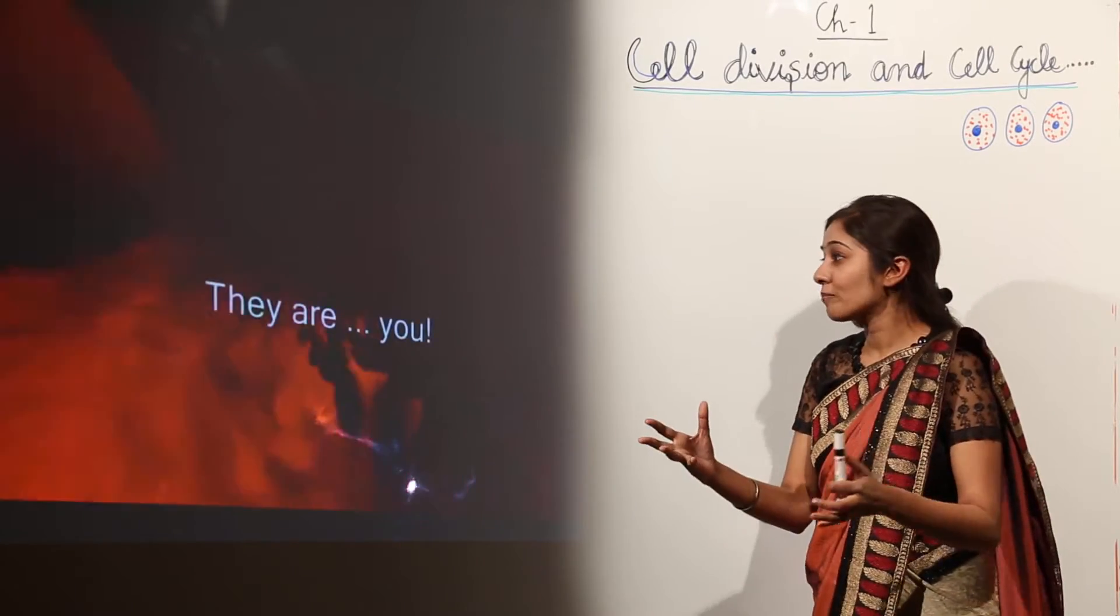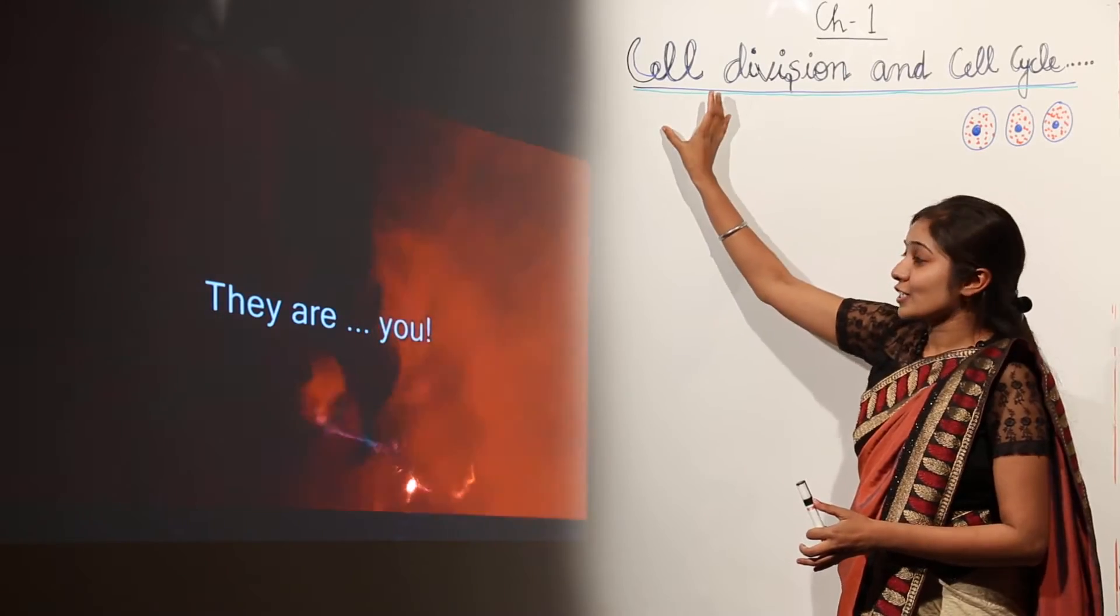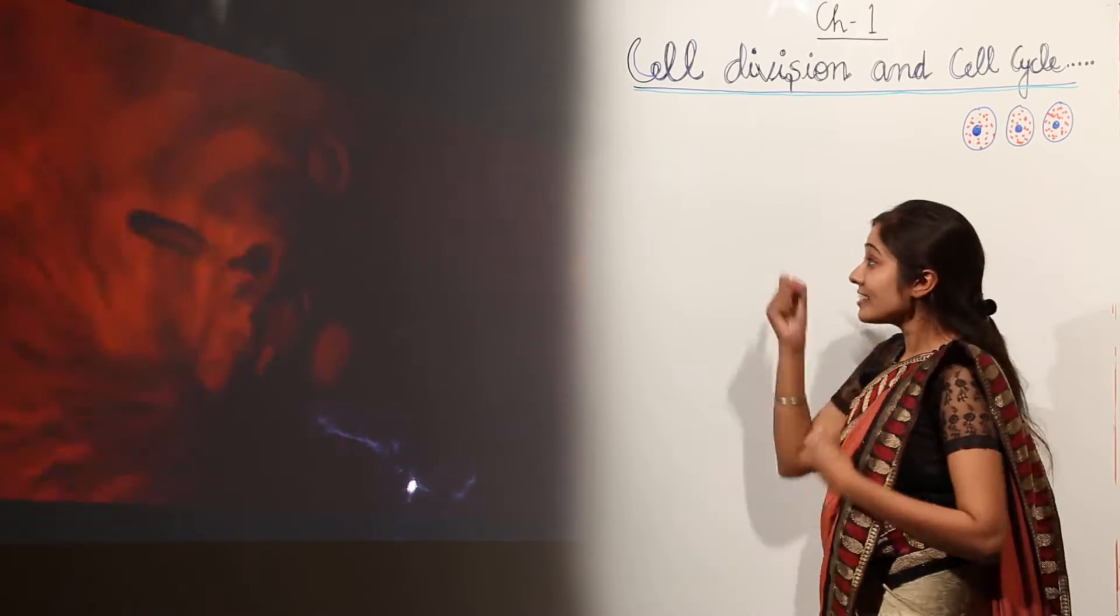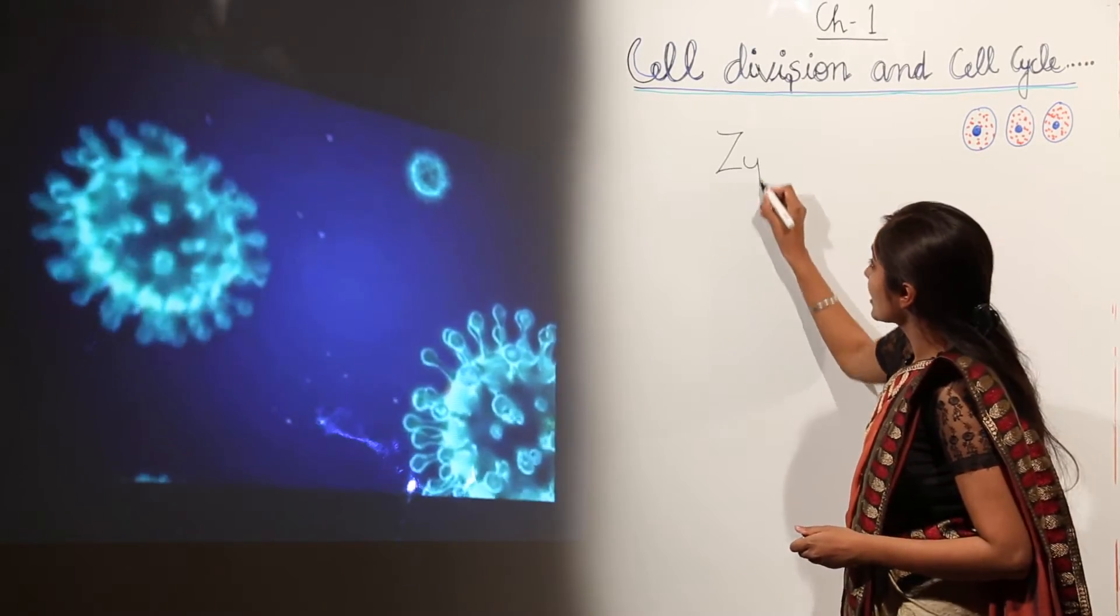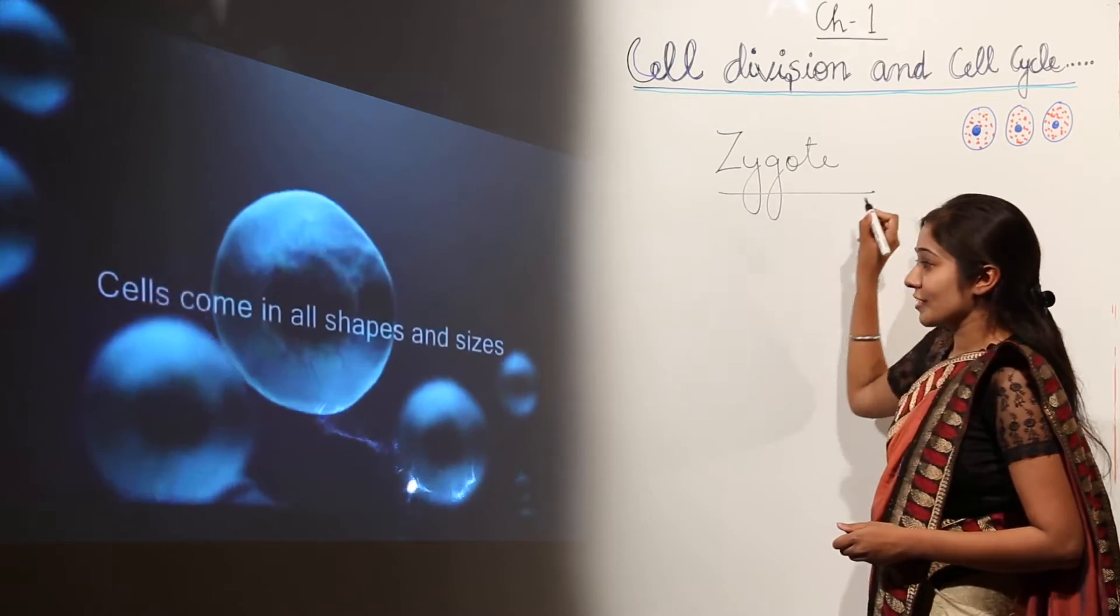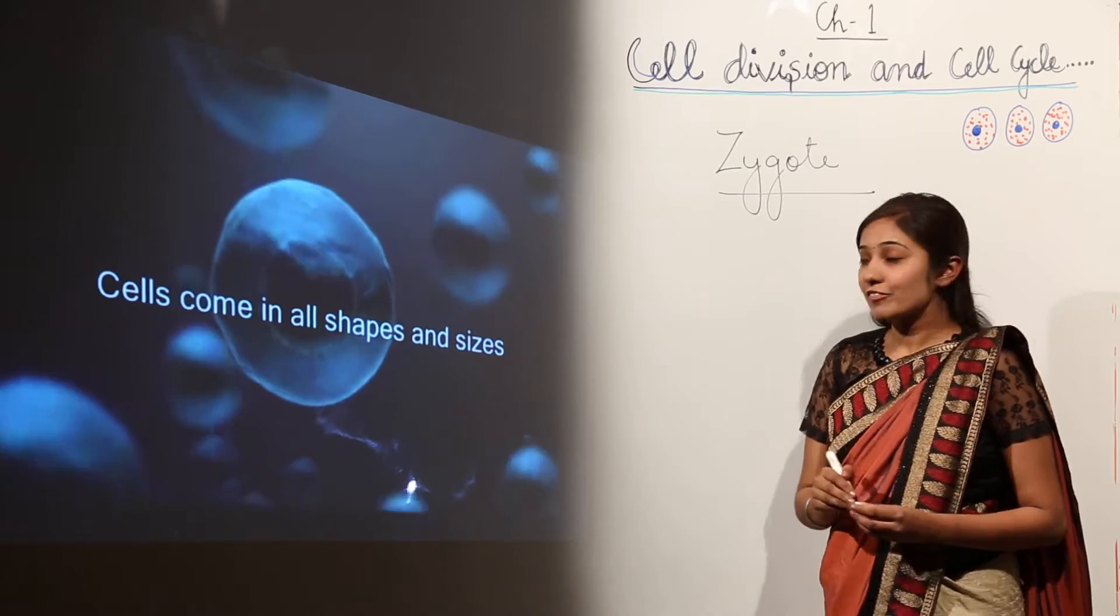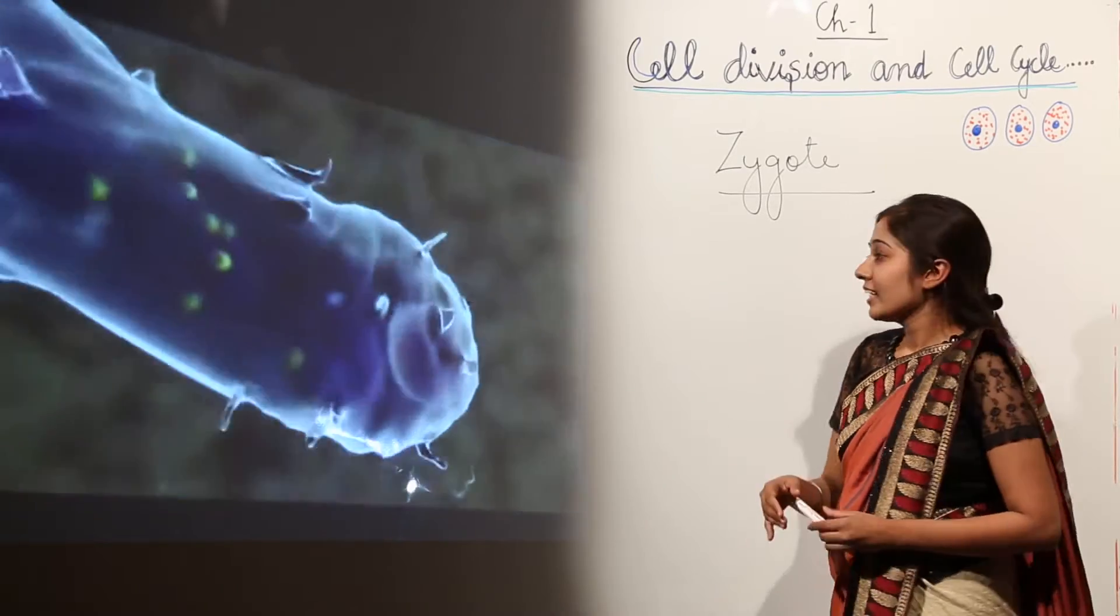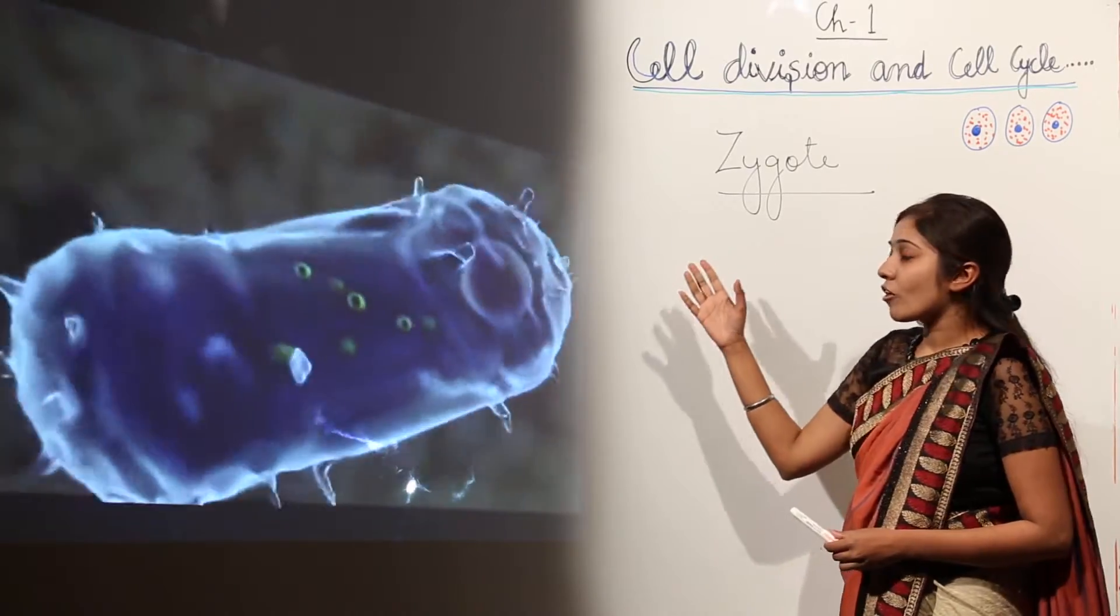and different functions they perform? These cells in our body - the first cell that we talk about for formation of the human body is the zygote. These cells come in different shapes and sizes. For example, if you talk of a nerve cell - the nerve cell is the longest cell of your body. If you talk about an adipose cell, a fat cell